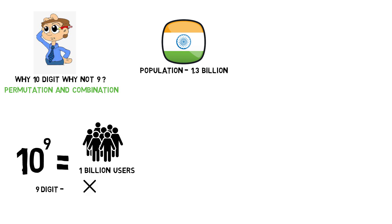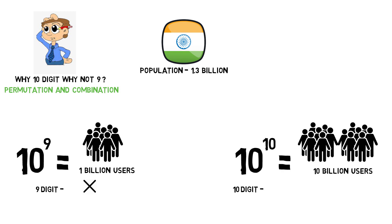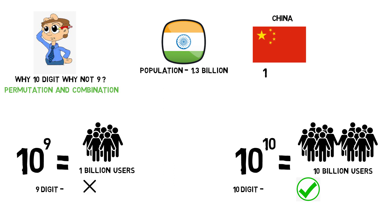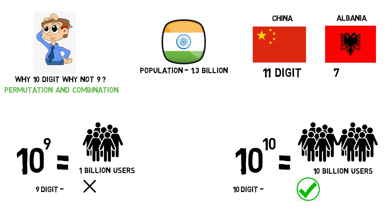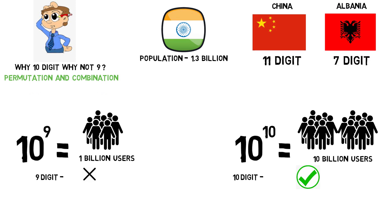A 10-digit mobile number gives 10 billion possibilities as the maximum number of users, accounting for one user having multiple accounts. For example, China uses an 11-digit mobile number, while Albania is a small country and uses a 7-digit mobile number.